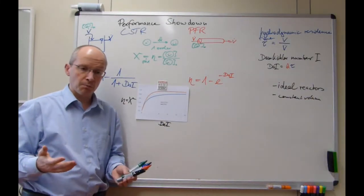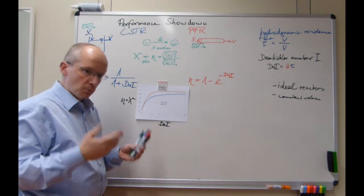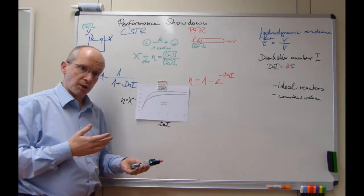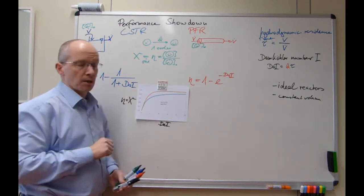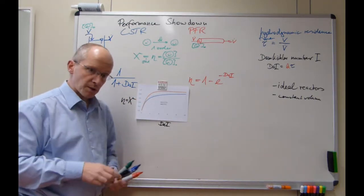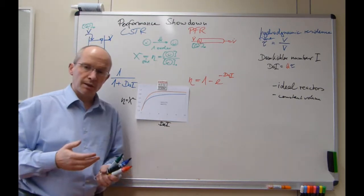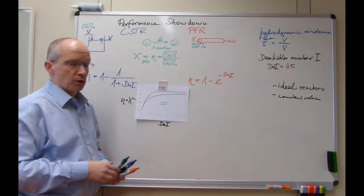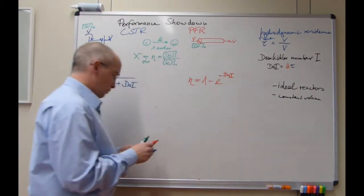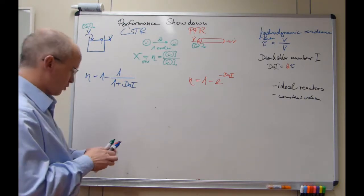Even more so if you consider the same conversion level. Let's look here at, for example, 80%. You hit that already at a Damköhler number of about two. You hit the same conversion at a Damköhler number of about three here. That, if you keep everything the same, means you would need a much longer residence time for the same reaction to perform equally in otherwise the same conditions. In this first order reaction, it is absolutely clear that the plug-flow reactor outperforms the continuous stirred tank reactor.